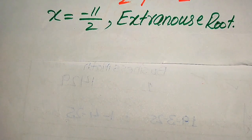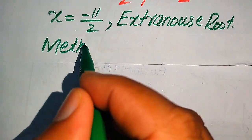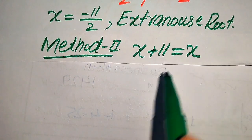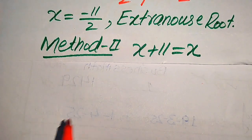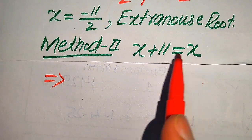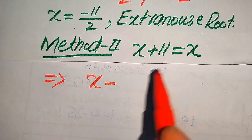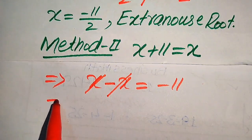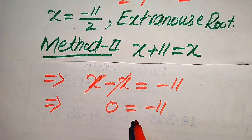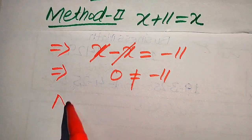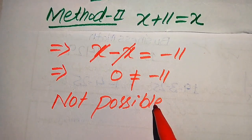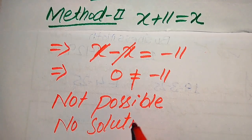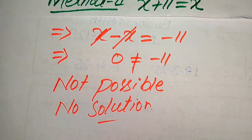Now in the second method, we copy down the given equation: √(x + 11) = x. Here I give a straightforward explanation. We move x to the left-hand side and 11 to the right-hand side: the positive x becomes −x, and +11 becomes −11. The terms simplify, giving 0 = −11. This is not possible, so we conclude the given equation has no solution.